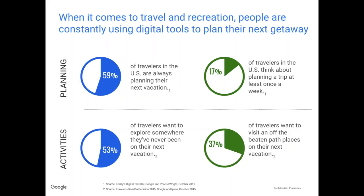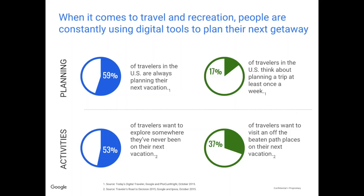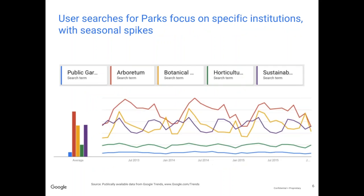When people go on these vacations, over half of people want to explore somewhere they've never been. Your organizations have something unique for people looking for a vacation, whether that's local or far away. And almost 40% — 37% — want to go somewhere off the beaten path. Your organizations have something really unique to offer. Hopefully these data points help you recognize how the category you play in is really top of mind right now, and we're seeing all these numbers grow over time.